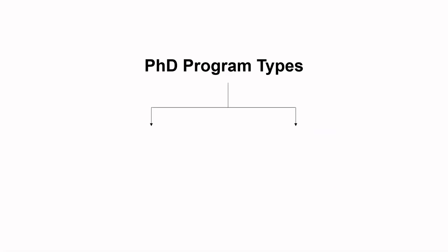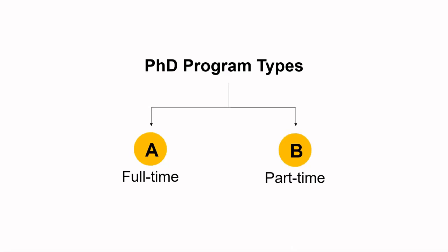Broadly speaking, majority of you might be aware that there are two types of PhD programs: full-time and part-time. Here I will first be talking about the full-time programs, which has six types. Type one: regular PhD with institute scholarship.